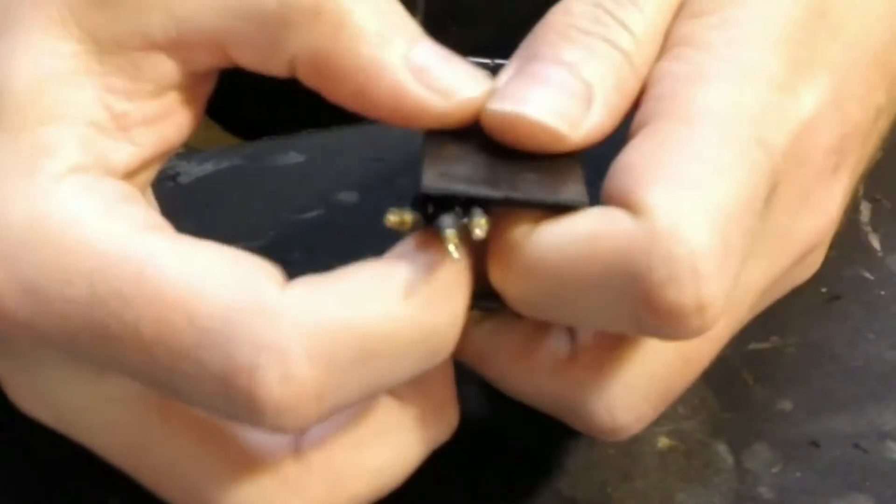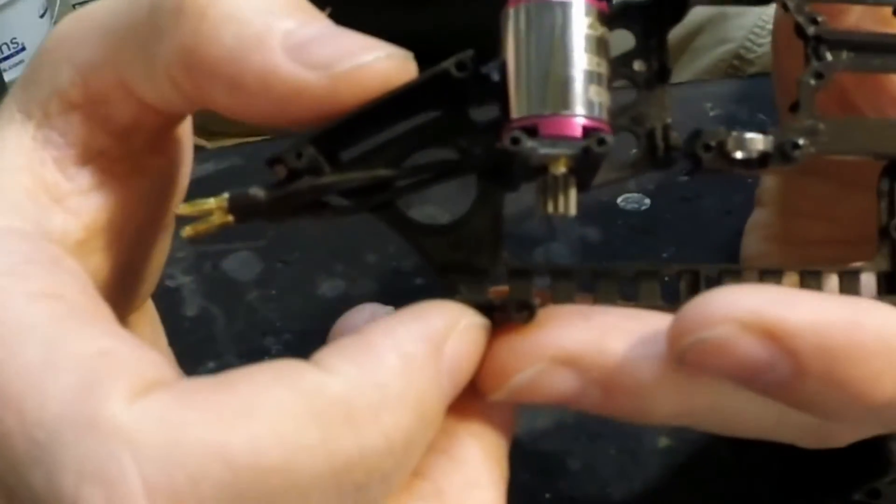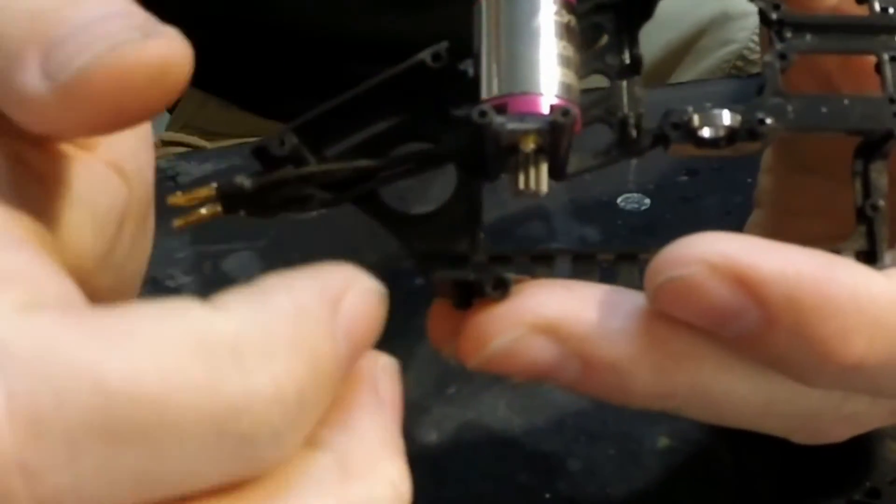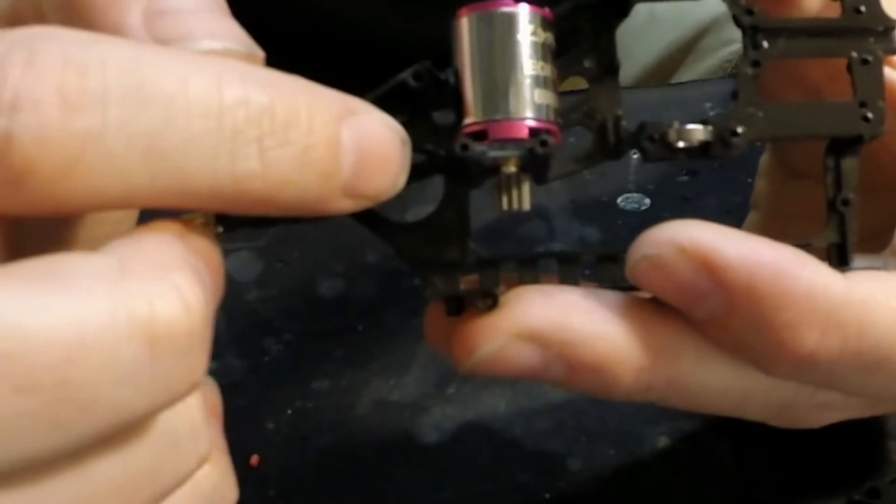Step four is to install the carbon fiber motor mount stiffener that came in one of the three plastic baggies in your kit. You can see I've already installed this one.